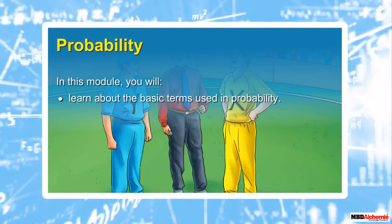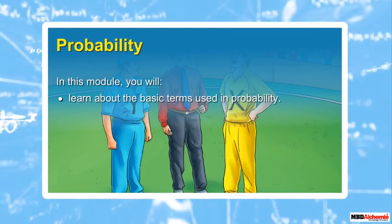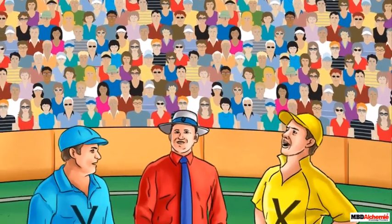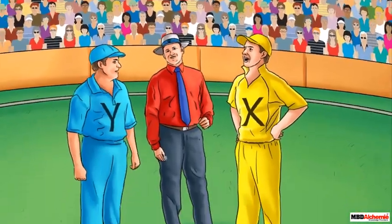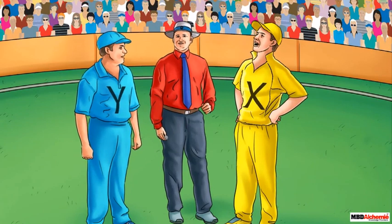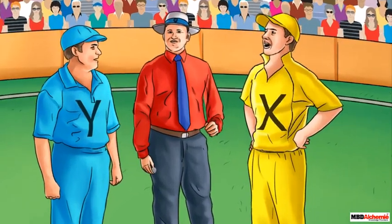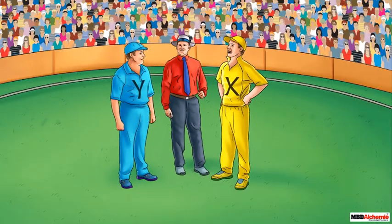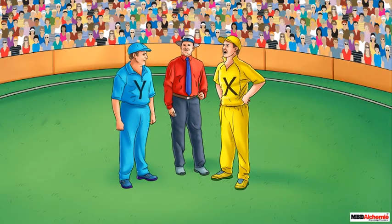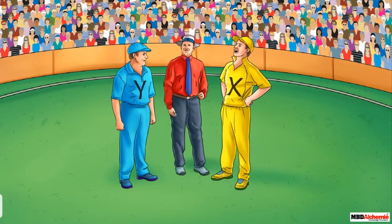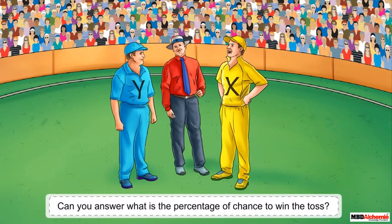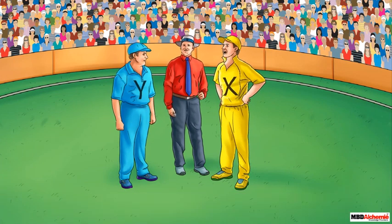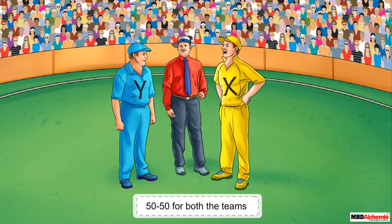In this module you will learn about the basic terms used in probability. A 2020 cricket match is going to start in the stadium between team A and team B. The captains of the teams named X and Y respectively are standing with the umpire, as this game will be started with a coin toss. Can you answer what is the percentage of chance to win the toss? Yes, it would be 50-50 for both the teams.